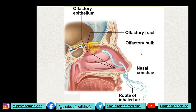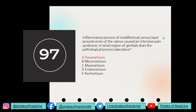The olfactory receptors are responsible for sensing the sense of smell. They carry this information to the brain via the olfactory tract, which is the only tract that does not pass through the thalamic junction — it goes directly to the brain via the middle cranial fossa.